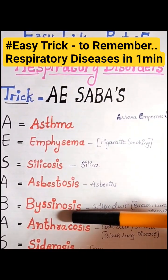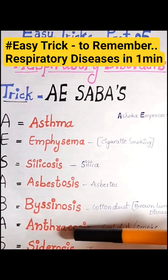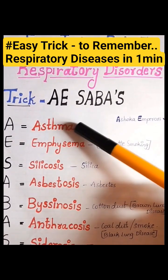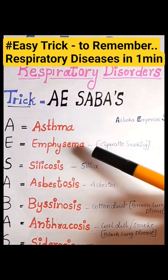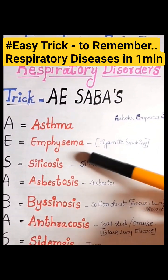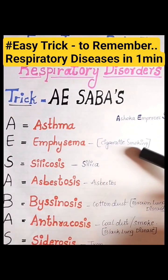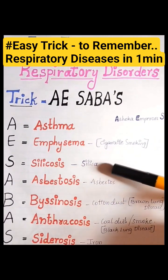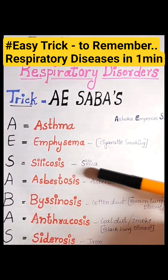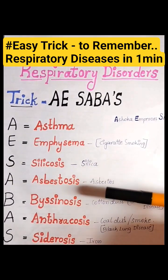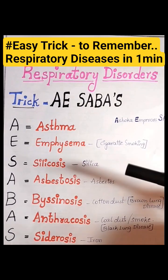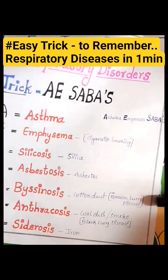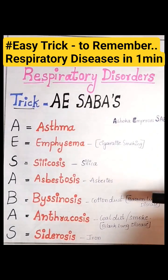Asthma causes difficulty in breathing. Emphysema is caused by cigarette smoking. Silicosis is caused by breathing in silicon dust particles. Asbestosis is caused by asbestos, and Byssinosis is caused by cotton dust.